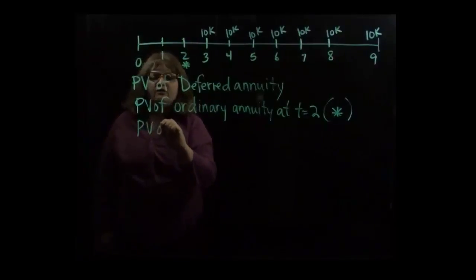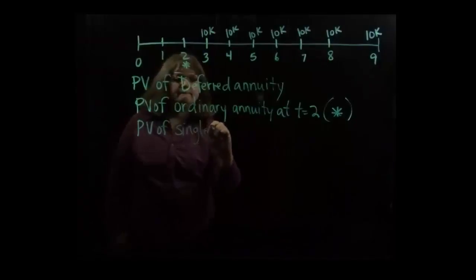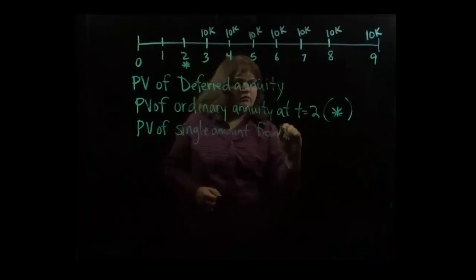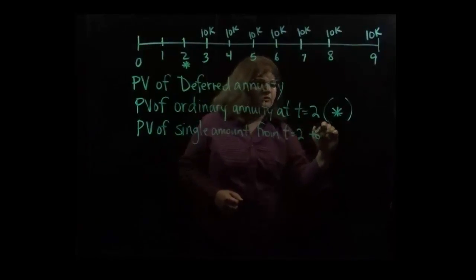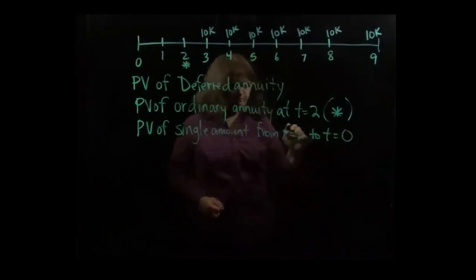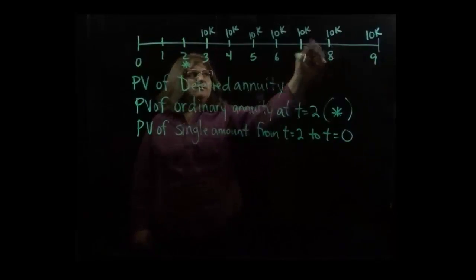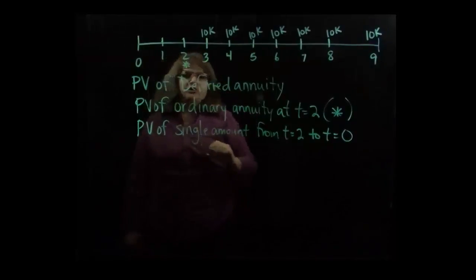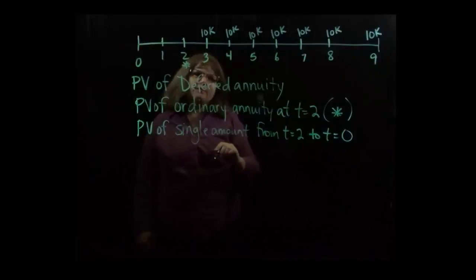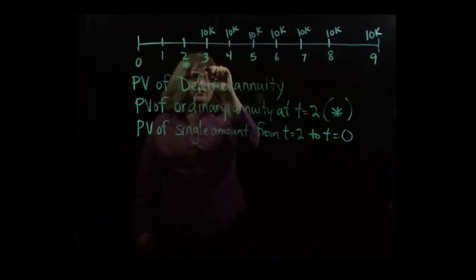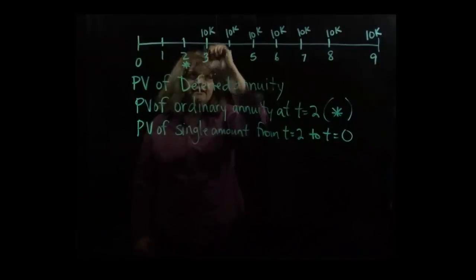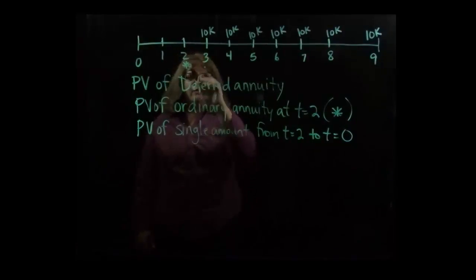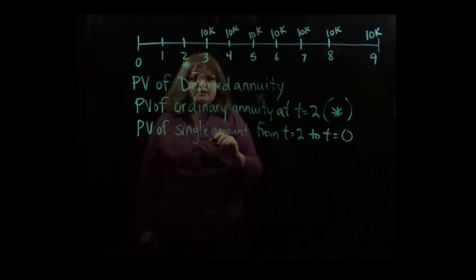So we'll get the present value of a single amount from time equals two to time equals zero. So we're going to get the present value of an ordinary annuity valued to here, and then bring it back two periods. That's our steps for a deferred annuity. Now you might be wondering, could you get the present value at time equals three instead, and consider this an annuity due? And the answer is yes, you could do it that way as well. But we're just going to show it the one way, which is with an ordinary annuity at time equals two.